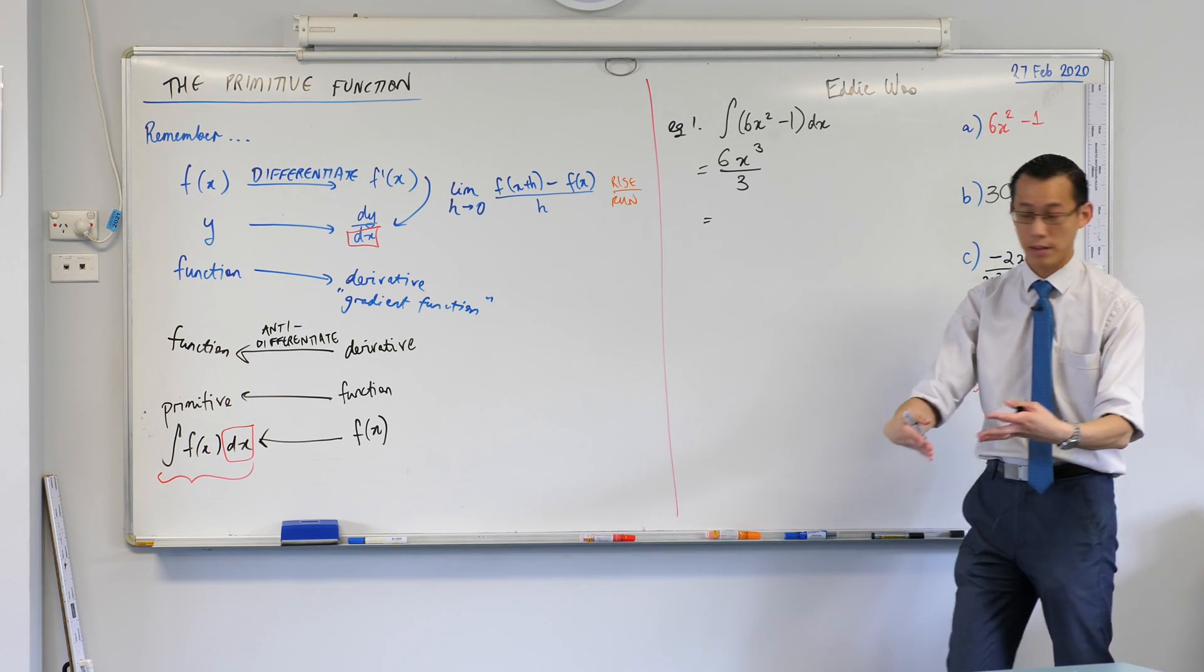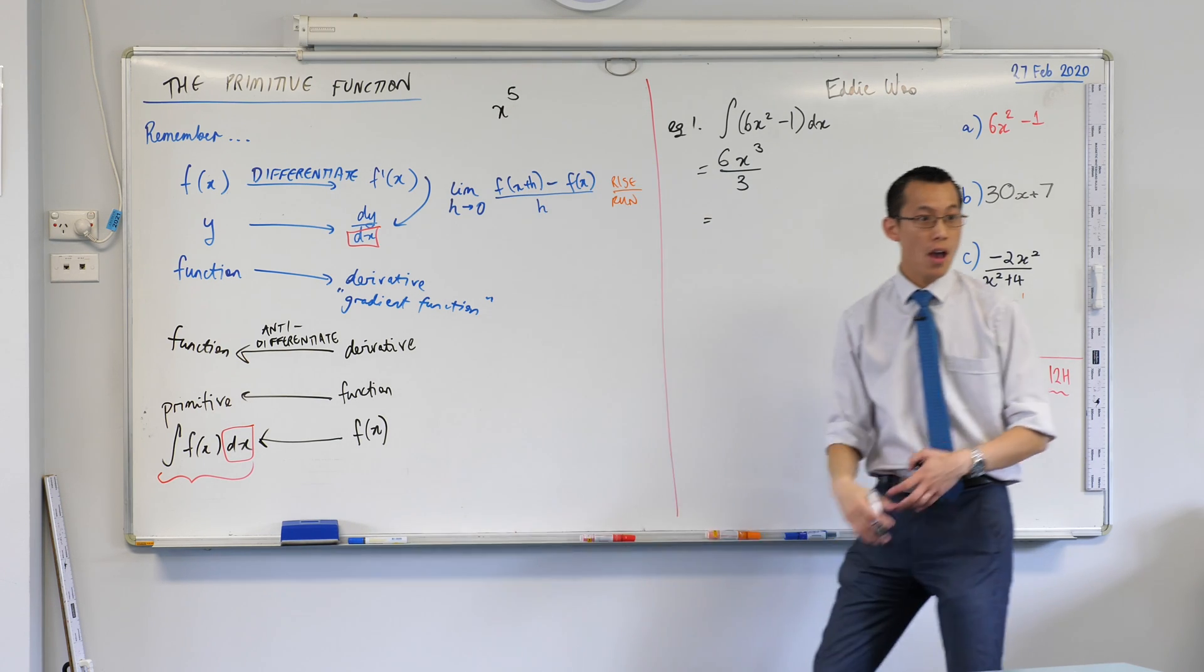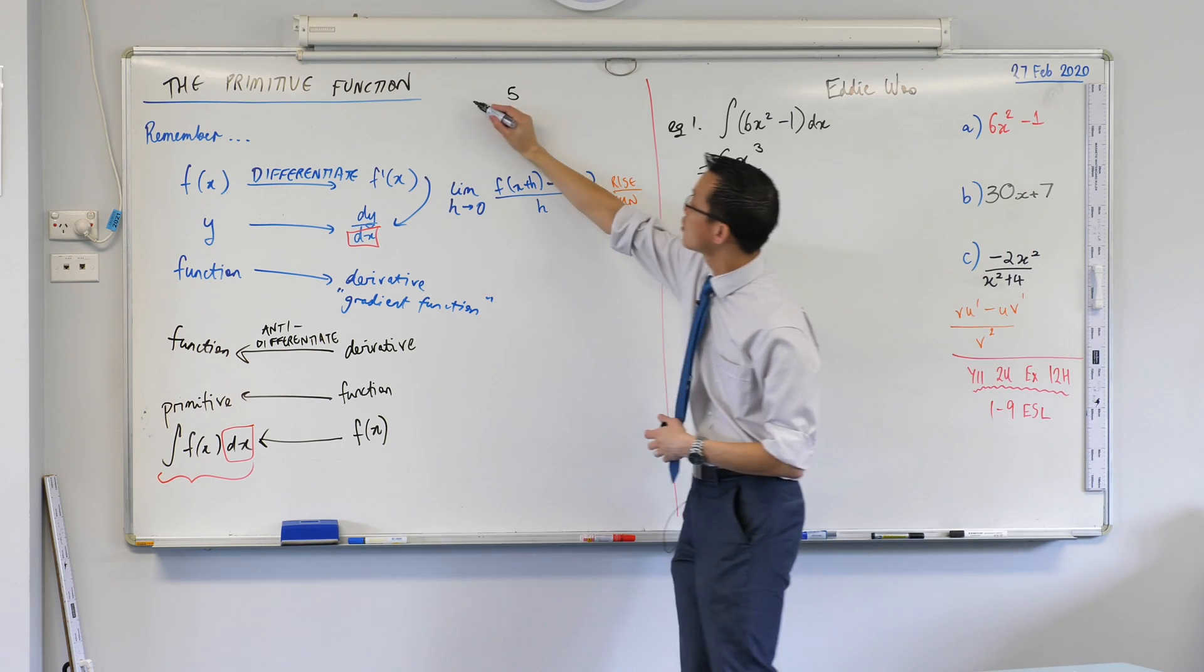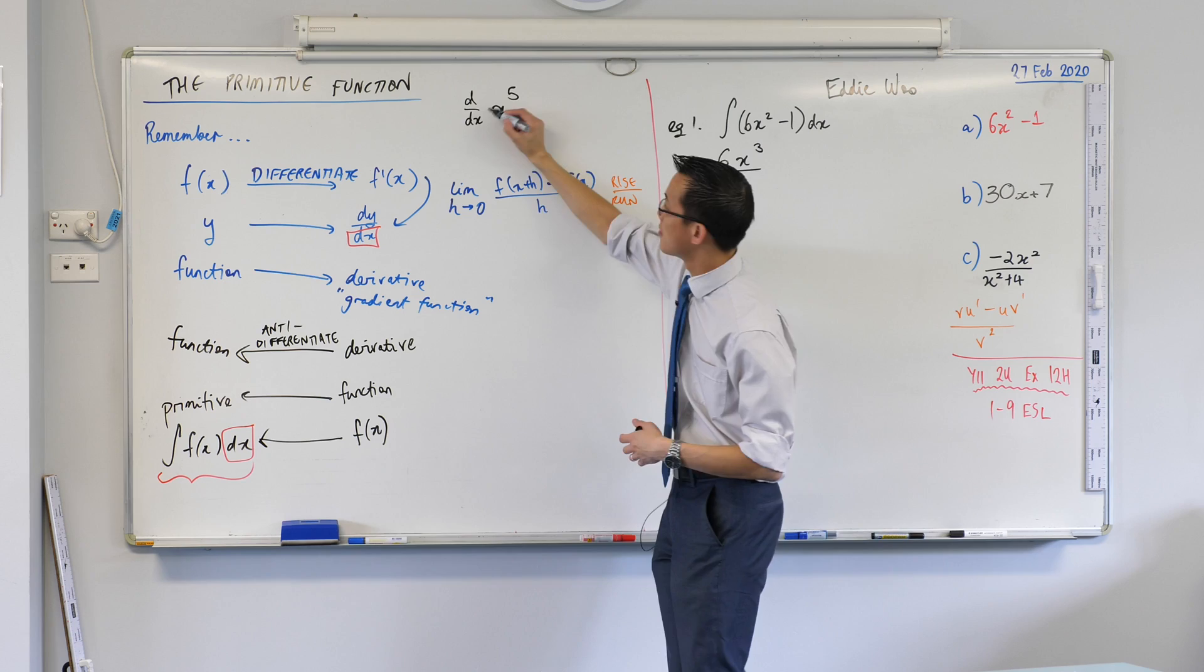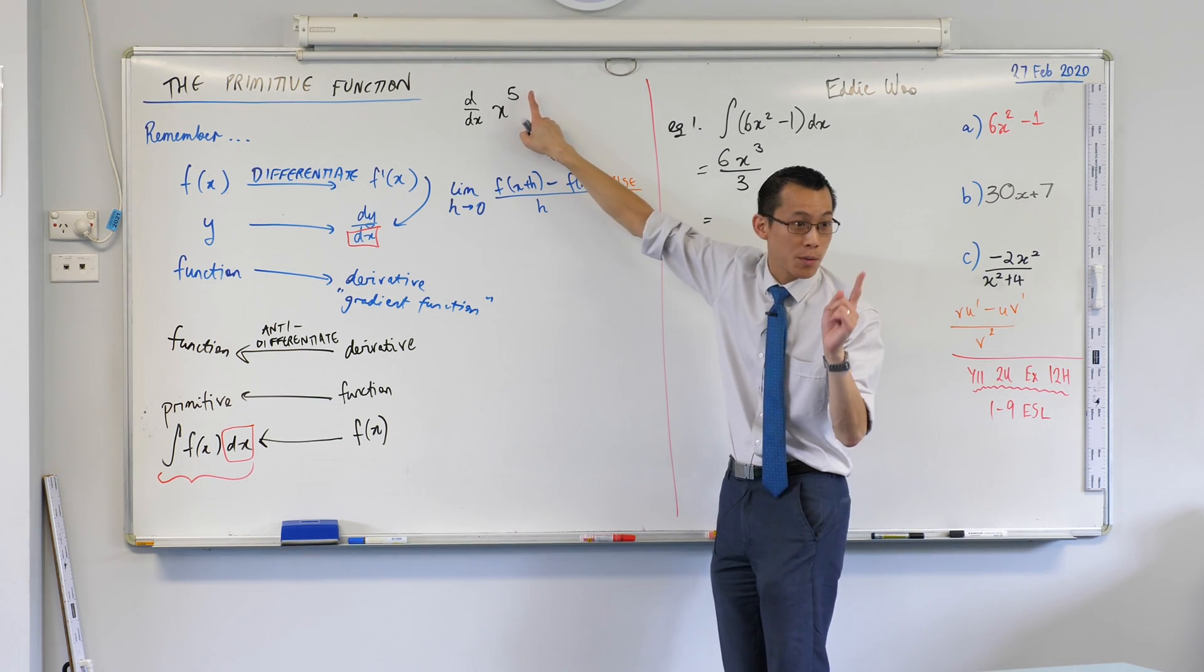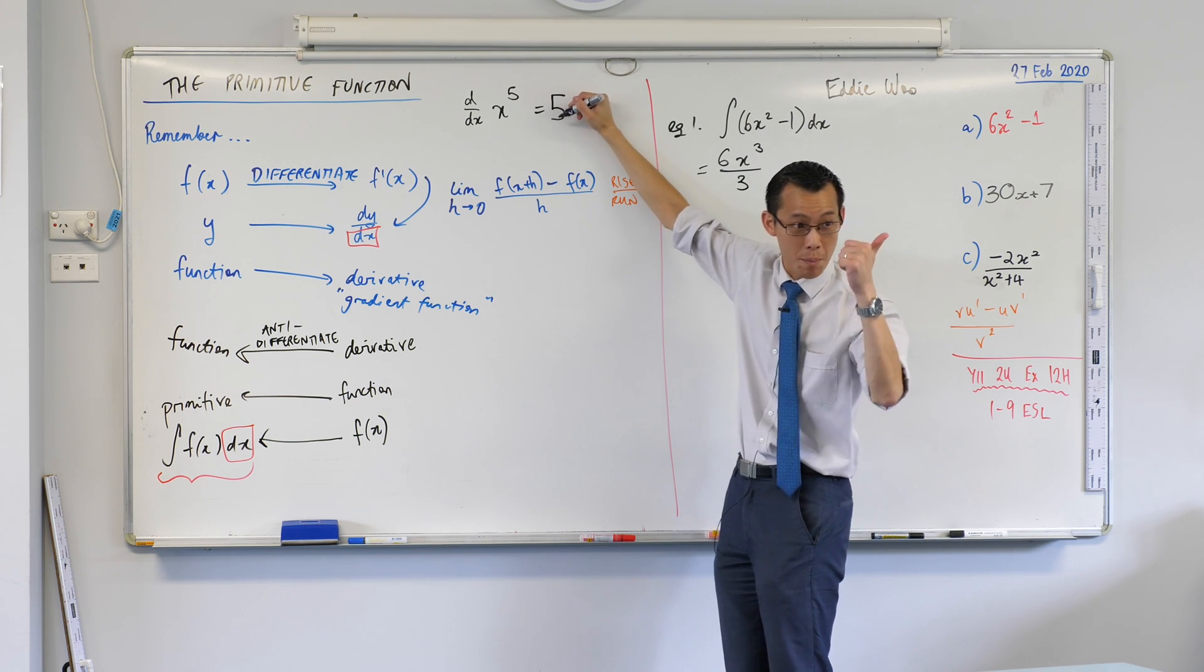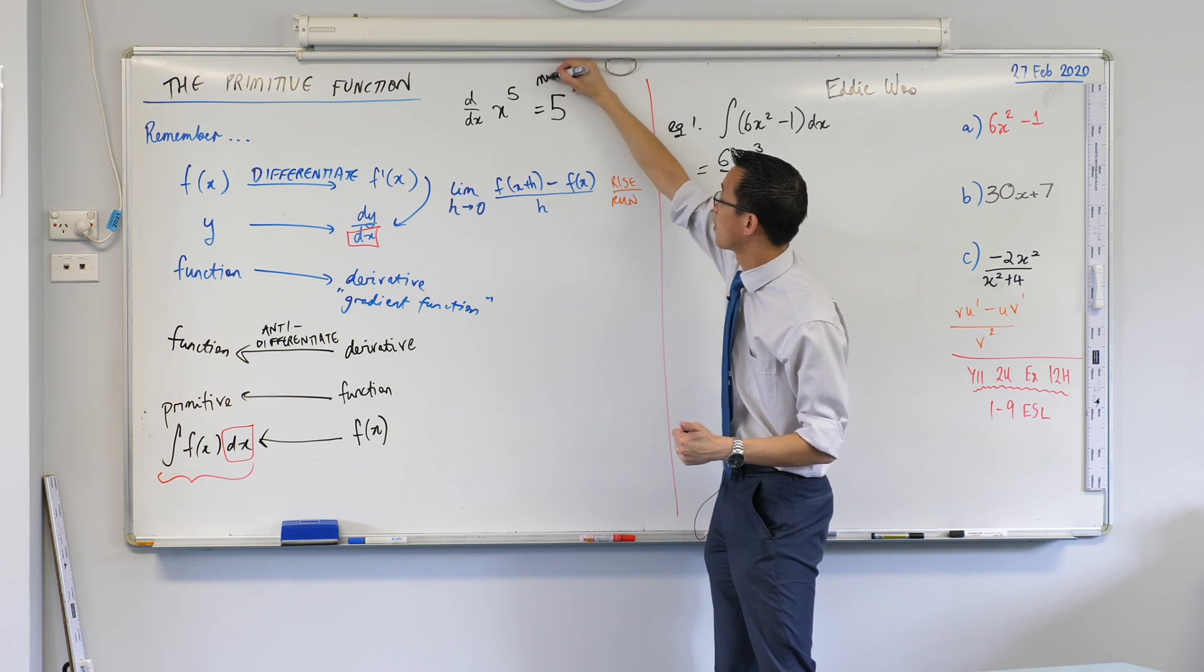When I take something like this, if I ask you to differentiate it, then two things happen, right? First, I'm going to multiply by this index. Let's do that. Here it comes. We multiplied first. In fact, it's so important, I'm going to write it down. That's the first thing I did.